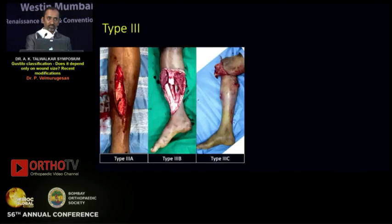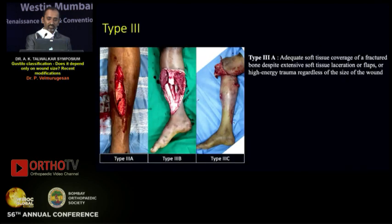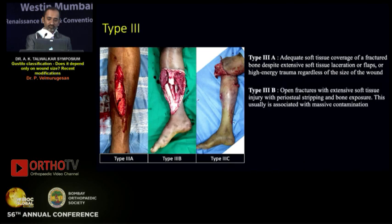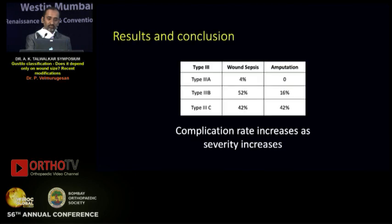Based on this they divided type 3 into three subtypes. Type 3a were wounds with adequate soft tissue cover over the fracture site despite extensive soft tissue damage. Type 3b were wounds with extensive soft tissue damage, periosteal stripping, and bone exposure, usually associated with massive contamination. Type 3c were open fractures associated with arterial injury requiring repair. They concluded there was an increase in complication rate with increasing severity of injury.